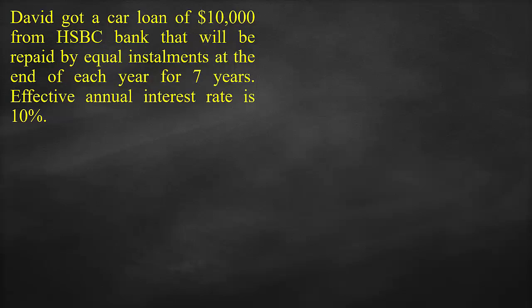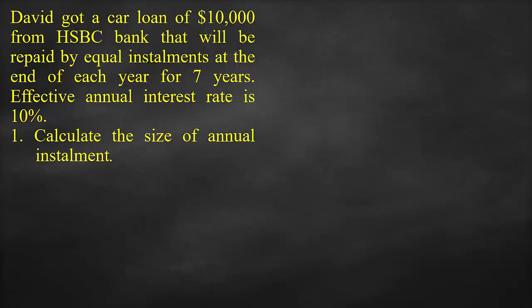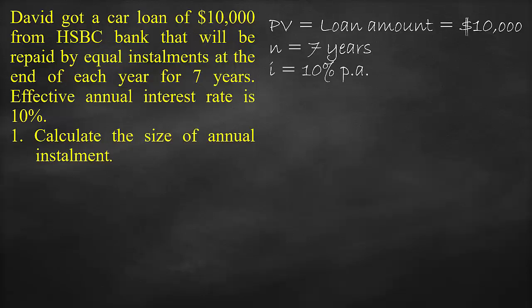Let's look at an example of loan amortisation. David has a car loan of $10,000 from HSBC bank that will be repaid by equal instalments at the end of each year for 7 years. The effective annual interest rate is 10%. The first part of the question is to calculate the size of the annual instalment. The variables we have are: present value of the loan at time zero is $10,000, the number of periods is 7 years, the effective interest rate is 10% per annum, and the unknown variable is the annual instalment, C.